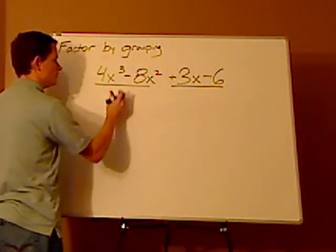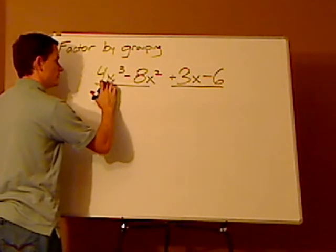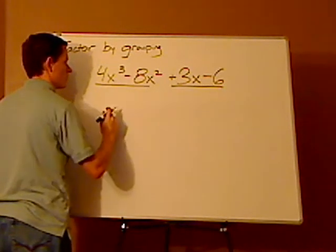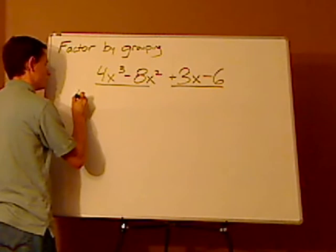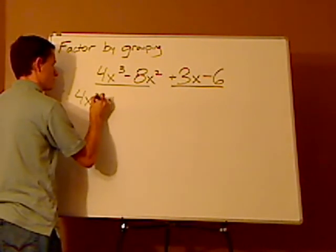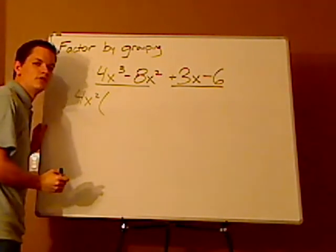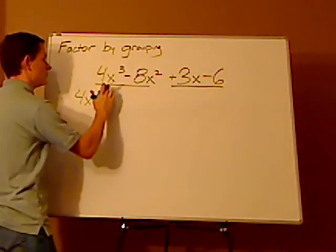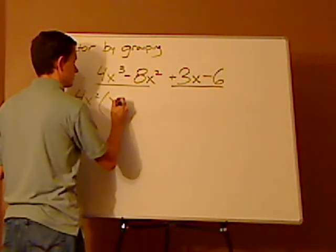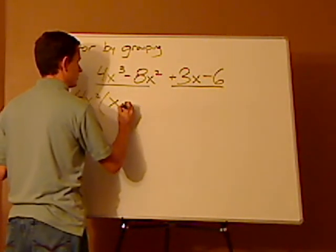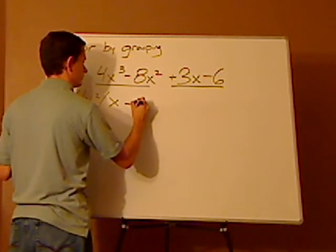And then you want to do the GCF of each of these. What's the GCF of 4x cubed and 8x squared? Right, it's 4x squared. And always do the GCF. Then you have x minus 2.